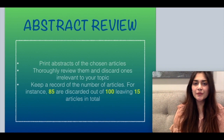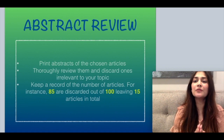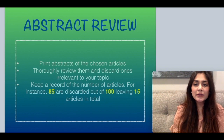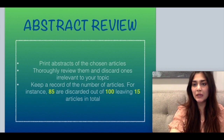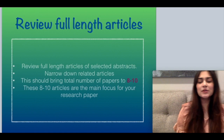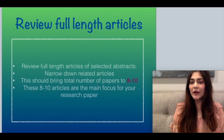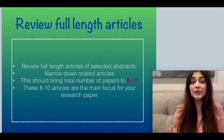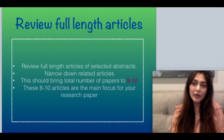After the title review, take the remaining 50 to 100 articles and find and print their abstracts. Thoroughly review the abstracts and discard those irrelevant to your topic — for instance, from 100 articles, you may discard 85, leaving you with 15. Then get the full-length articles of the chosen abstracts, read them in great detail, find the relevant ones, and discard the irrelevant ones. This should bring the total to about 8 to 10 articles, which are the main focus for your research paper.